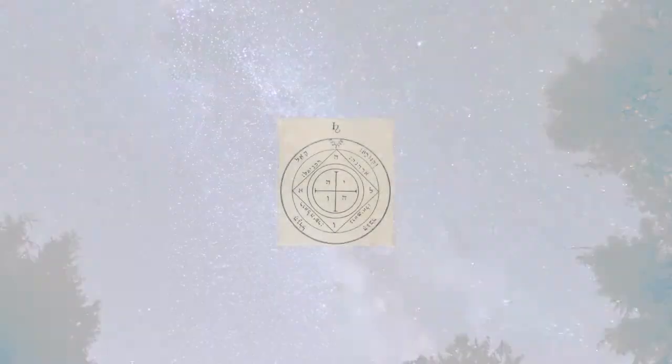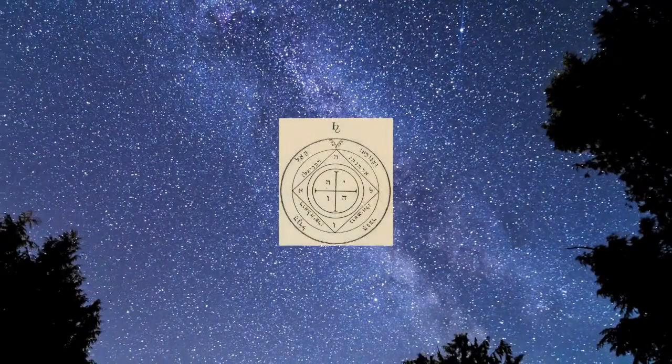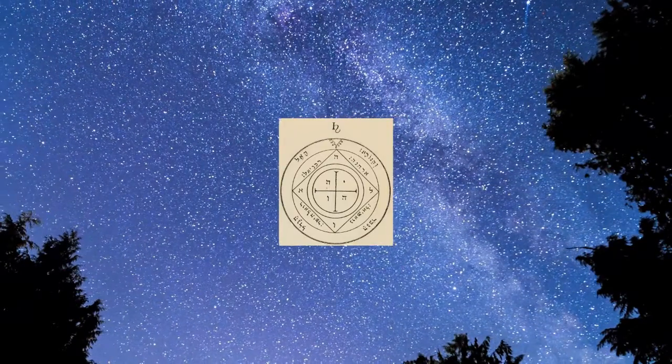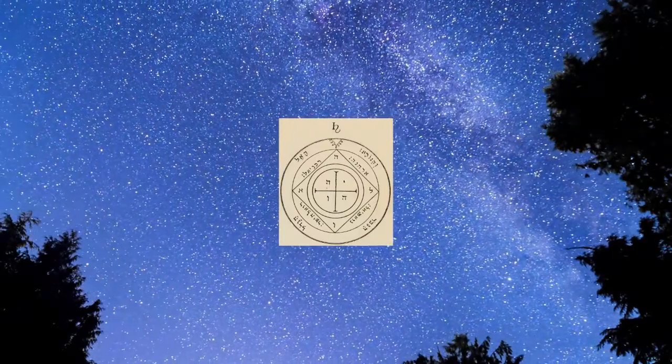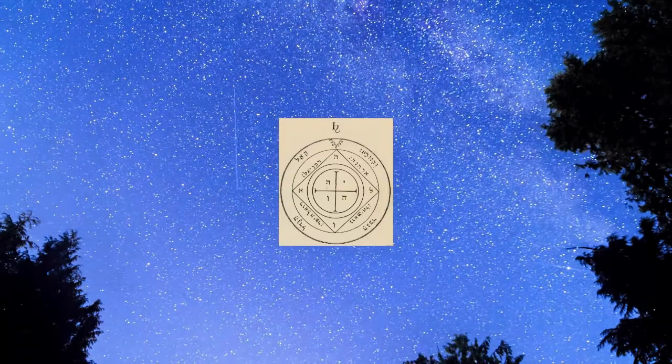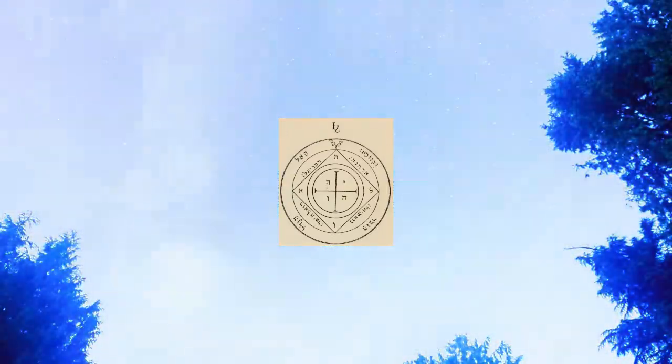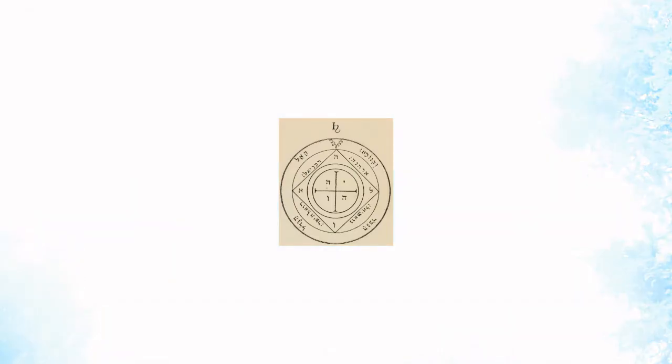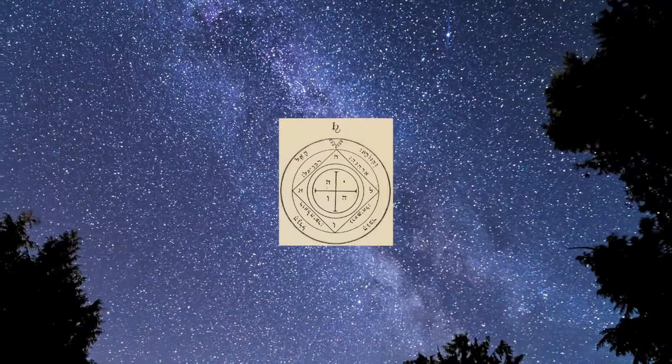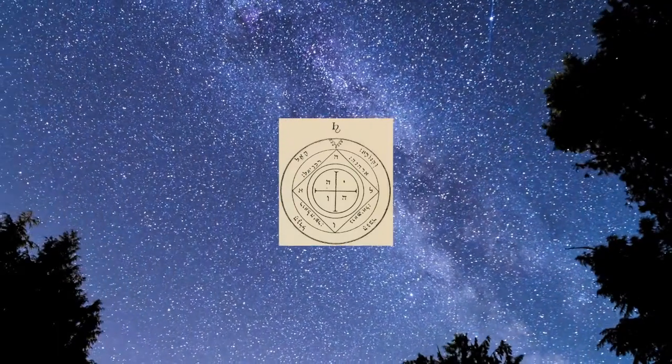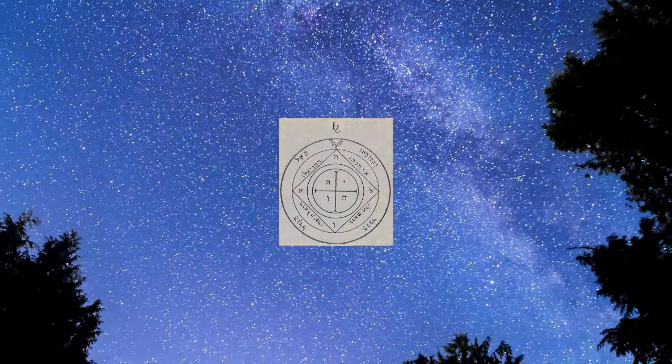The fifth sigil of Saturn. This sigil defends those who invoke the spirits of Saturn during the night, and chases away the spirits that guard treasures. The verse written in Hebrew here is Deuteronomy 10 verse 17: For the Lord your God is God of gods and Lord of lords. The great God, mighty and awesome, who shows no partiality and accepts no bribes.